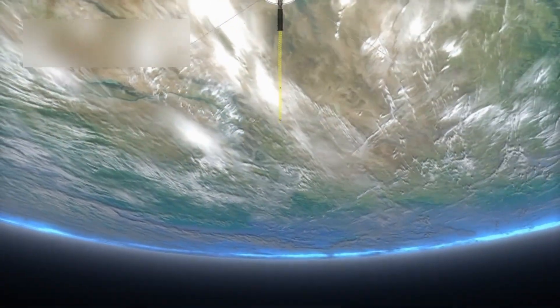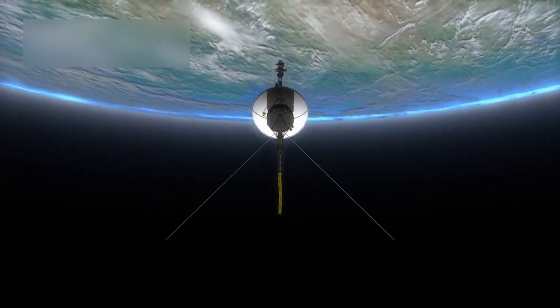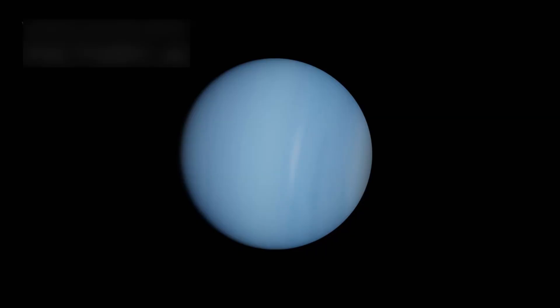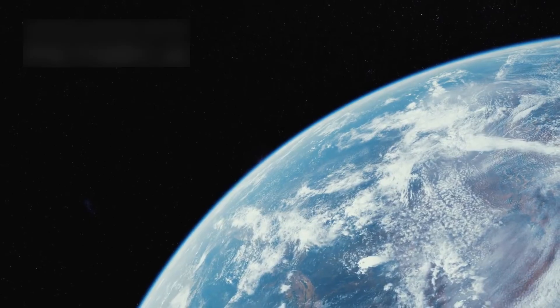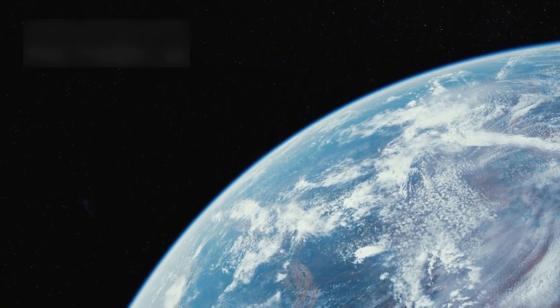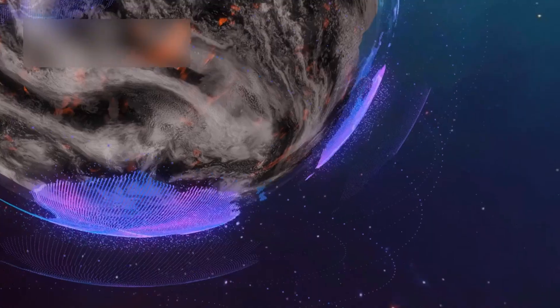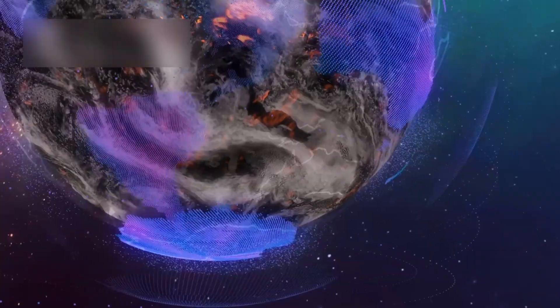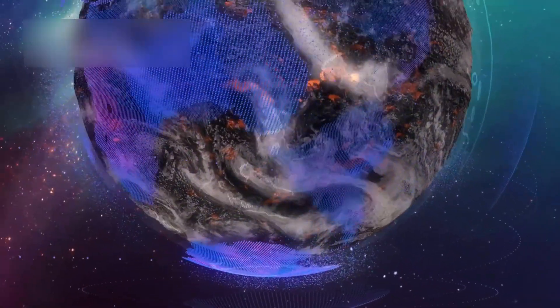The mission has already answered many questions but has raised even more. From uncovering volcanoes on Io to taking the famous pale blue dot photo of Earth, Voyager 1 has changed how we see ourselves. That small dot in space is our home, seen from billions of miles away. It's a powerful reminder of our place in the cosmos and how tiny we are in the vastness of space.